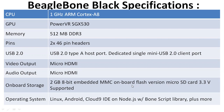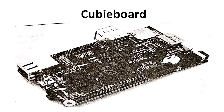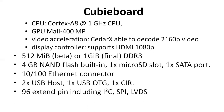Coming to the last board, the Cubieboard — it is a single-board computer made in China. It can run Android 4 ICS, Ubuntu 12.04 desktop, Fedora 19, and Remix desktop operating systems. The structure of the Cubieboard is similar to the Raspberry Pi, with HDMI for audio and video output and similar processor and GPU components.